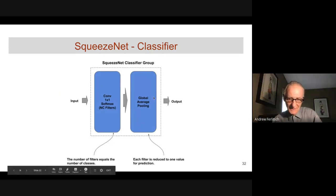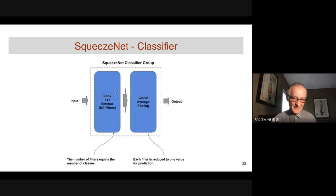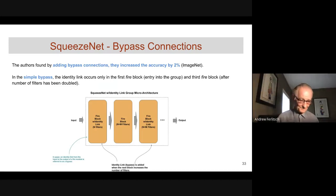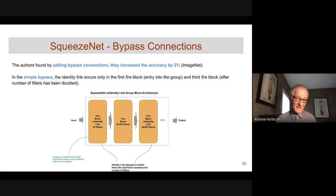The SqueezeNet classifier inverts the usual order: first comes the 1×1 convolution outputting softmax probabilities, then the global average pooling bottleneck layer. Later, modifications to SqueezeNet introduced bypass connections — essentially residual links. Without any residual links in the original blocks, adding simple bypasses increased ImageNet accuracy by about 2%. They tried two versions — simple and complex — where in the simple bypass, the identity link occurs only in the first and third FIRE blocks of a group.